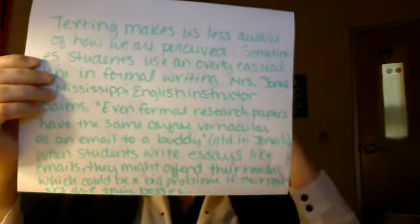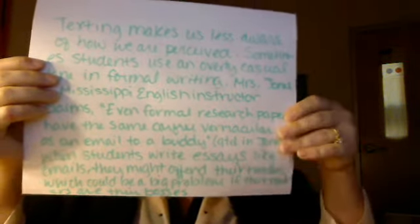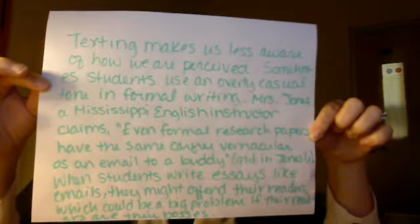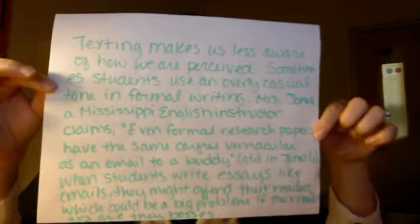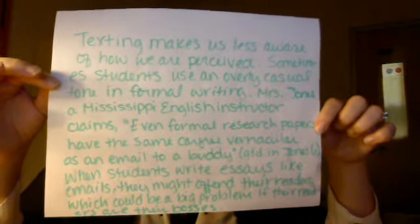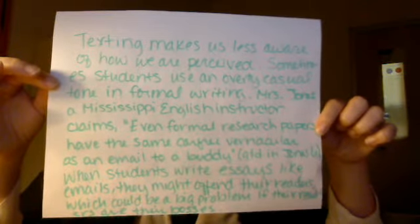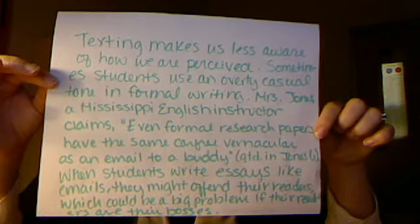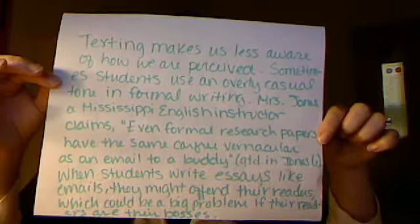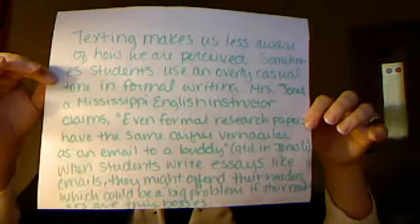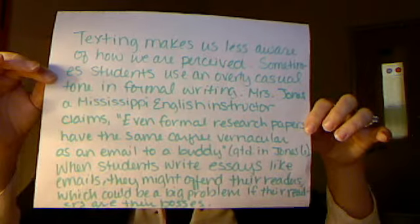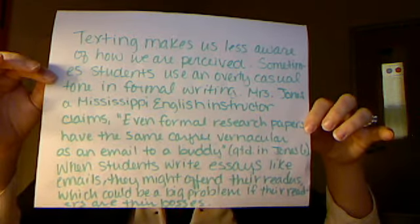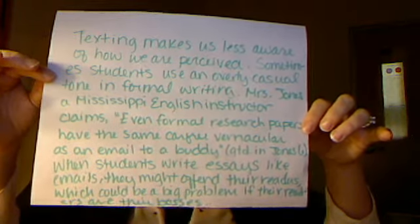Here's an example of a pi paragraph. If my thesis is that text messaging affects written communication, one of my main points might be that texting makes us less aware of how we are perceived. That's my topic sentence — it's making a claim, it's arguable, and it relates back to my thesis. Then I say: sometimes students use an overly casual tone in formal writing. This is furthering or making my claim a little more specific in the second sentence. Mrs. Jones, the Mississippi English instructor, claims even formal research papers have the same carefree vernacular as an email to a buddy.